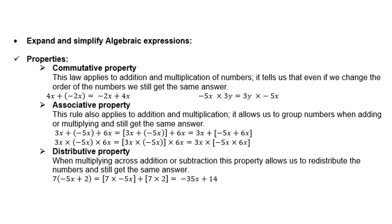The associative property: this rule also applies to only addition and multiplication. It allows us to group numbers when adding or multiplying them and we still get the same answer. Please take note, look at the examples there. Whether we group the first two or we group the last two with addition, with multiplication, the outcome is still the same. But again, it does not work for subtraction or division.